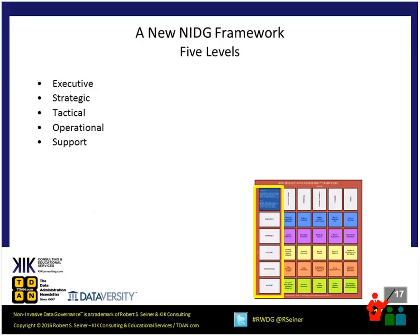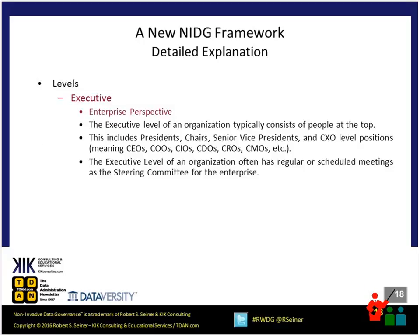Down the left-hand side of this new framework, I list five different levels: the executive level, the strategic, the tactical, the operational, and the support levels. If we can address each of those five different components from each of these different levels' perspectives, then we can basically build all the tools and everything we need to deliver a successful data governance program for our organization.